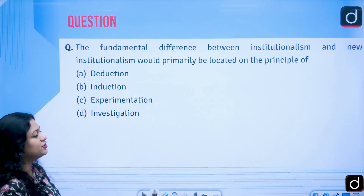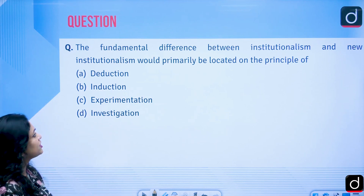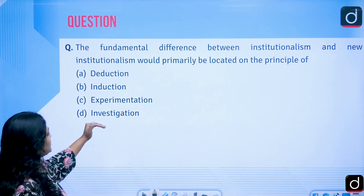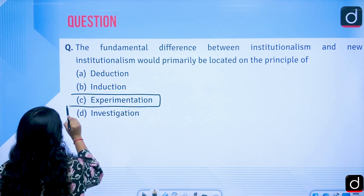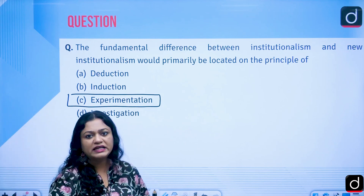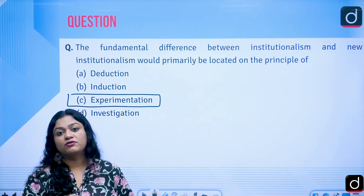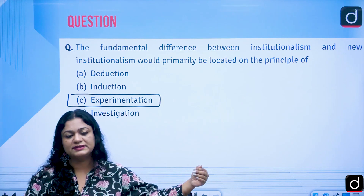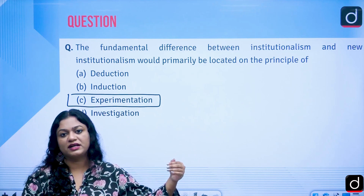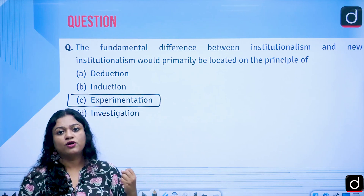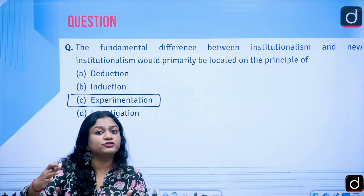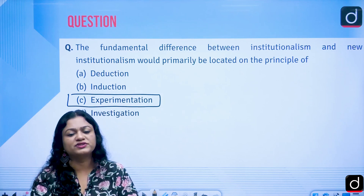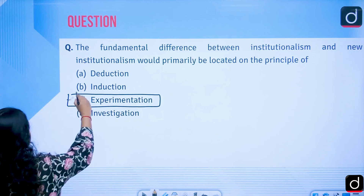Here is a question asked in the UGC Net examination: 'The fundamental difference between institutionalism and neo-institutionalism would primarily be located on the principle of what?' The options are deduction, induction, experimentation, and investigation. The answer is experimentation, because institutionalism was highly descriptive and not analytical, whereas neo-institutionalism was highly influenced by the behavioral revolution and tried to bring both facts and values into the institutionalist approach.